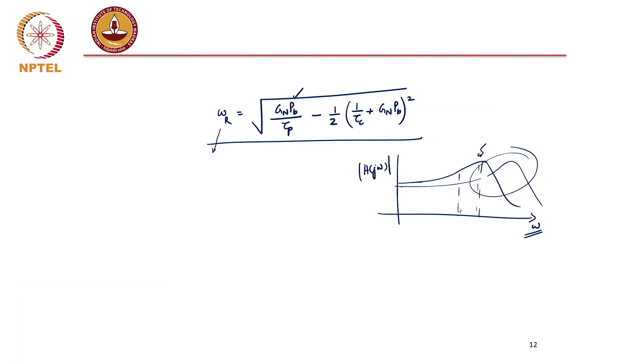The first lesson is your operating bandwidth is limited somewhere around the resonant frequency. You will say that to be on the safe side, I will operate at less than 50 percent of the resonant frequency. But the resonant frequency itself is decided by your p_b. So I can have control on my resonant frequency by changing my operating power.